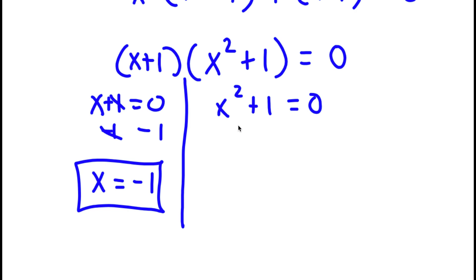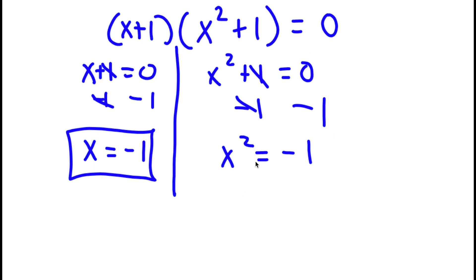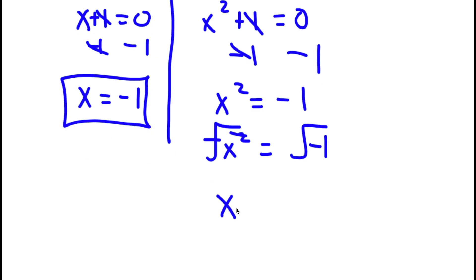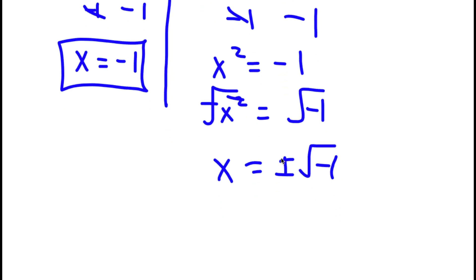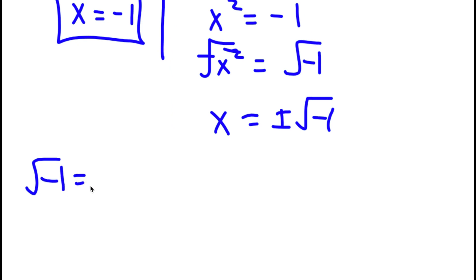For x squared plus 1 equals 0, I subtract 1 on both sides. The ones cancel out and I have x squared equal to negative 1. Now I take the square root on both sides. The square root of x squared is x. The square root of negative 1 is actually positive or negative square root of negative 1, and as you may know, the square root of negative 1 is the imaginary number i. So if I replace the square root of negative 1 with i, I get x equal to positive or negative i.